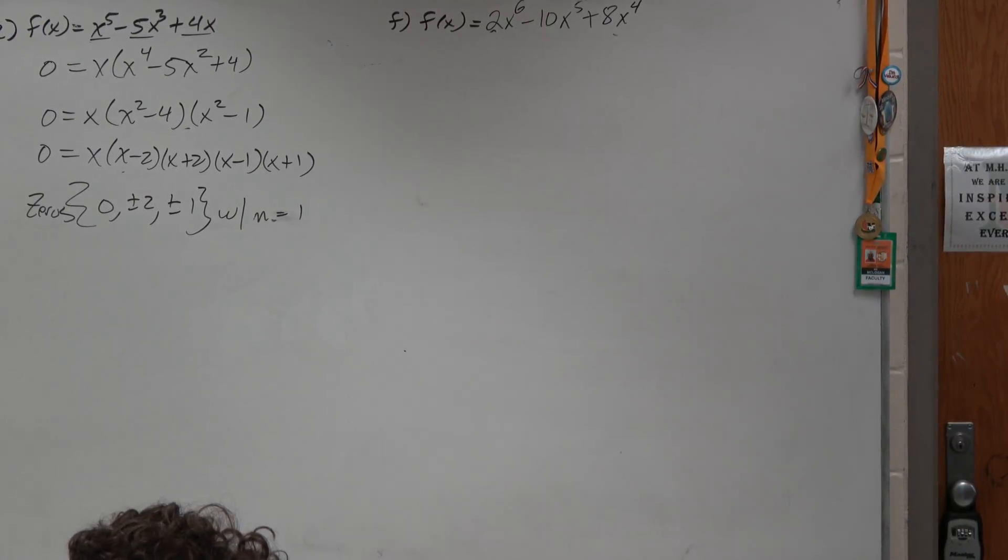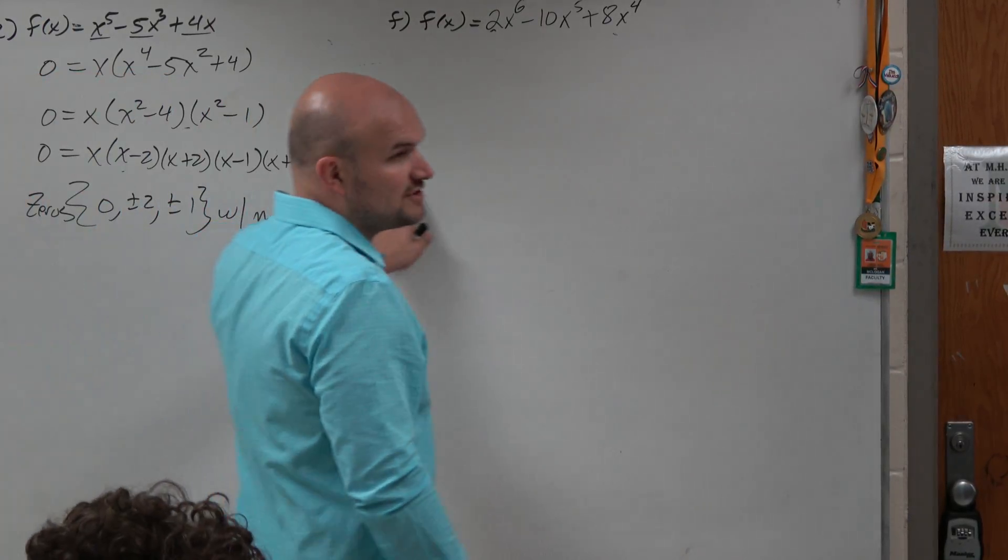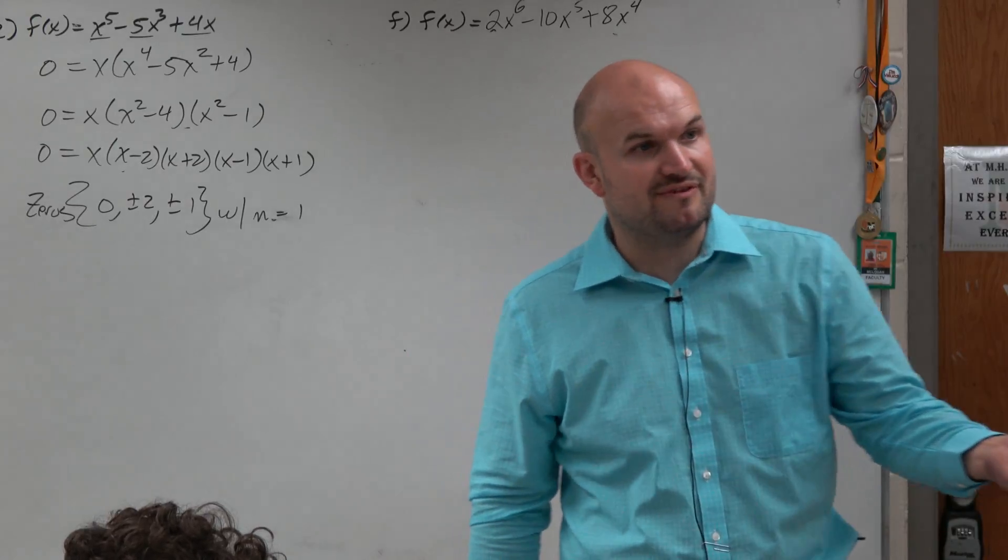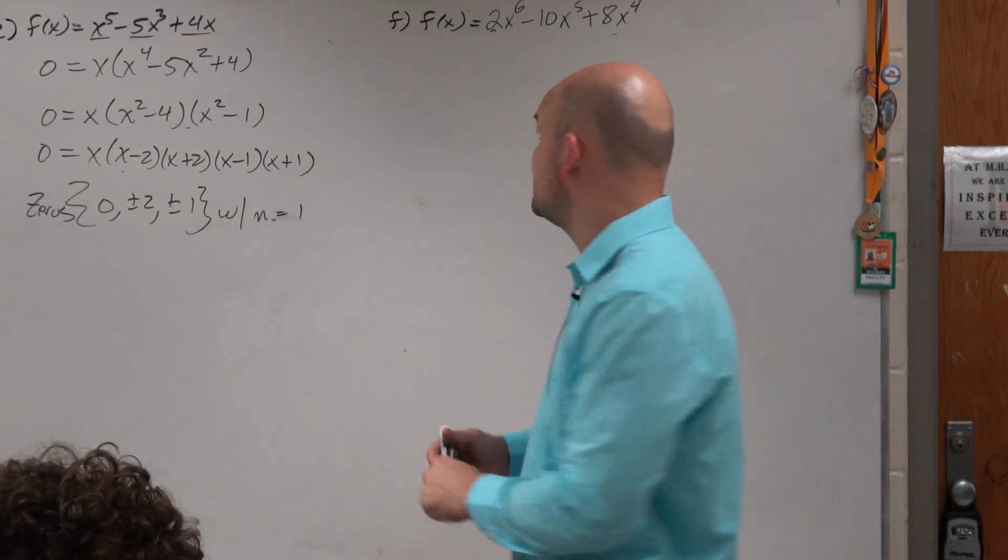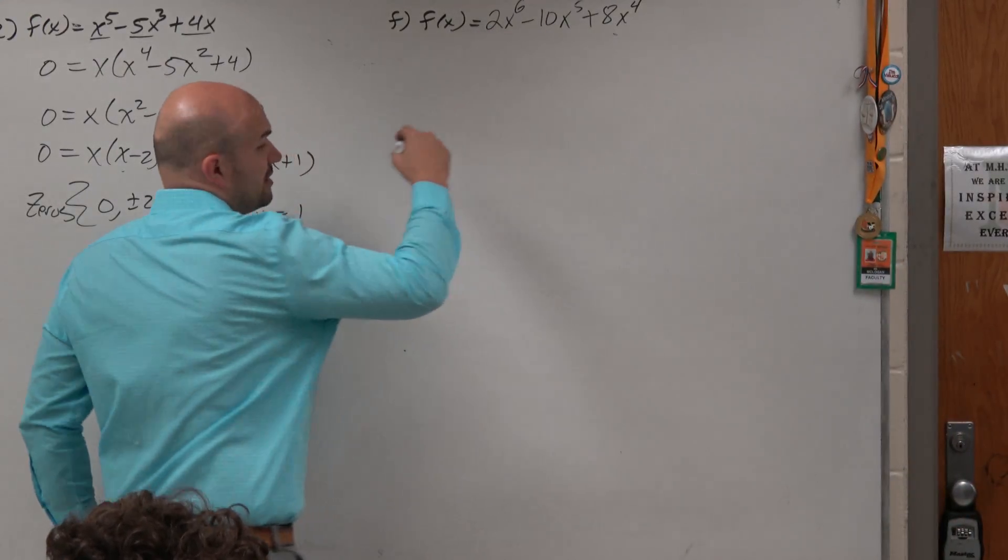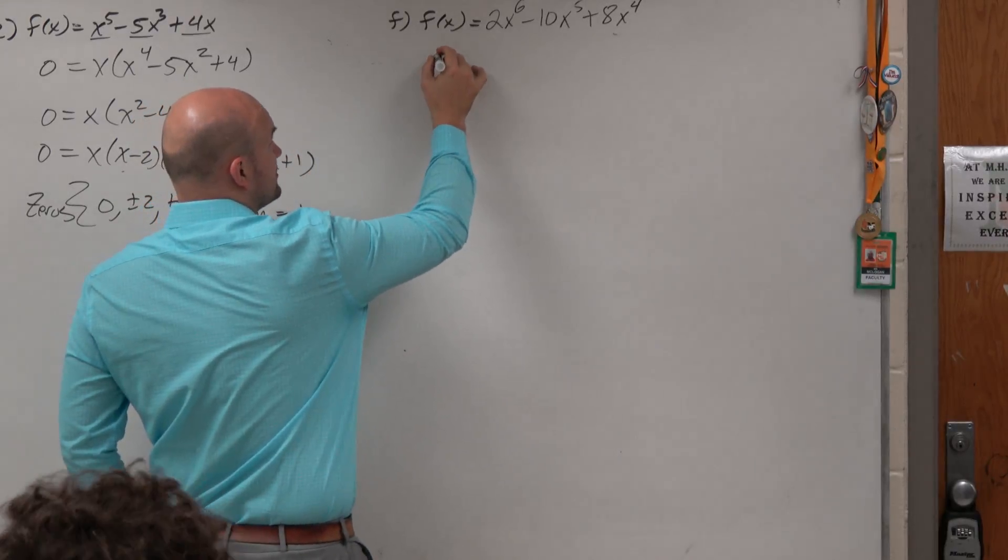OK, last example. What did I mention to you guys? The first thing we should do is always try to factor out common factors, right? So we see this. We say, all right, so I'm trying to find the zeros. So I'm going to set this equal to zero.